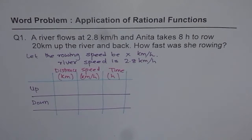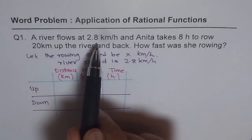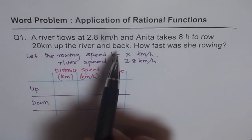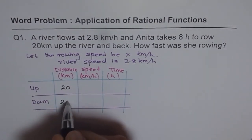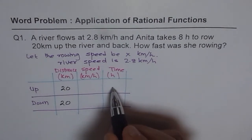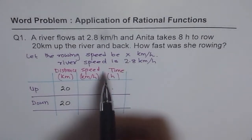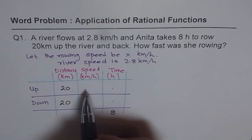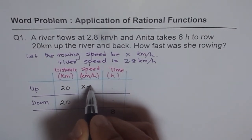Now we fill in the matrix with the given data. The distance is 20 kilometers up and 20 kilometers back, and the total time for both is 8 hours. If Anita's rowing speed is x and river speed is 2.8, then going upstream her speed is x minus 2.8, since the river goes against her.